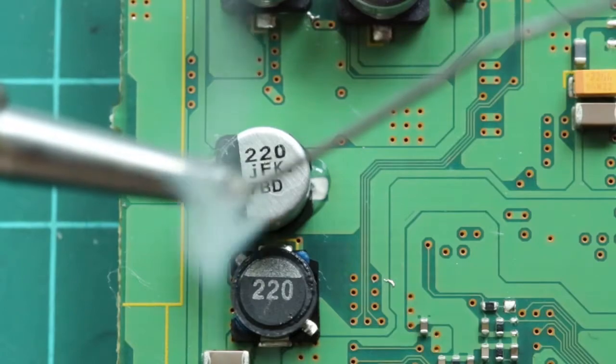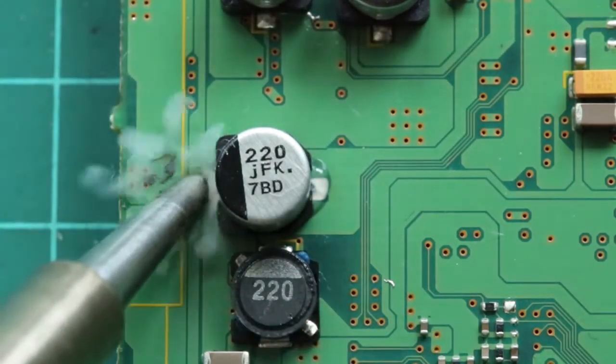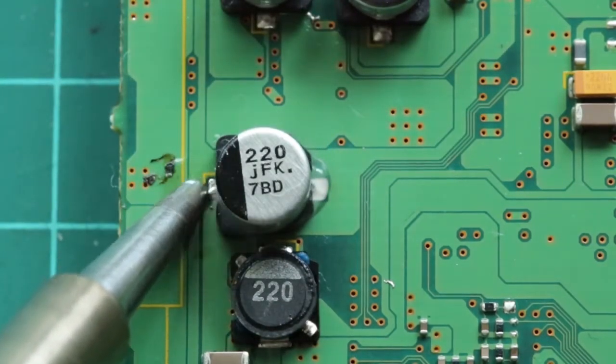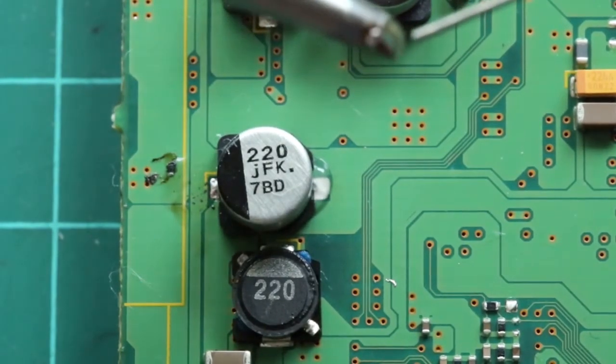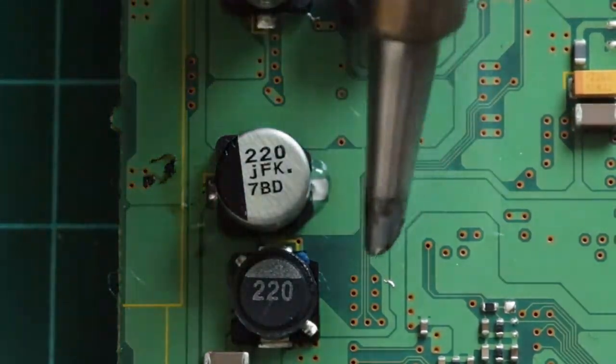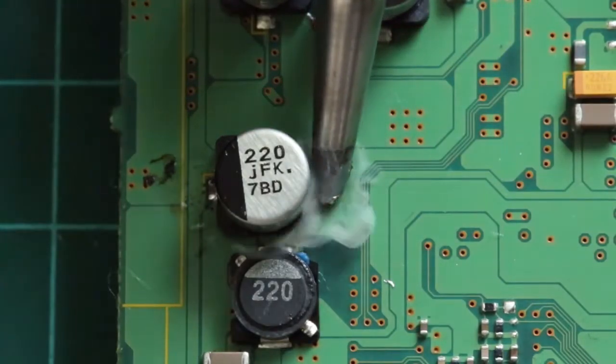Fill the gull wing soldering tip with solder, and heat up the joint. The flux will draw the solder into the joint. Do the same for the other joint.